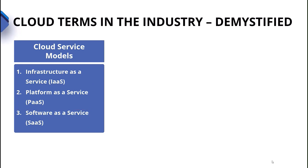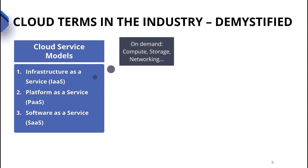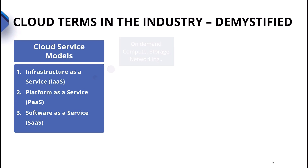What matters about these? How are they different? Well, infrastructure as a service — think about that as the concept of providing infrastructure on demand. These could be compute, storage, and networking components that are provided to you as a service. You request them and they're delivered to you as a service.